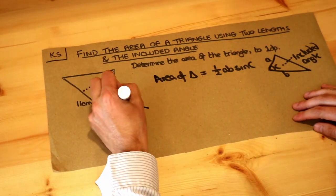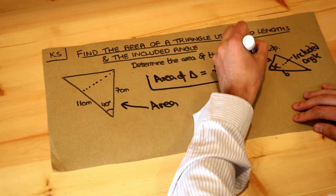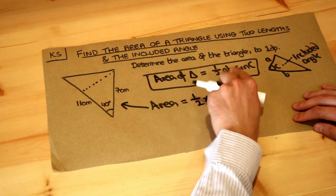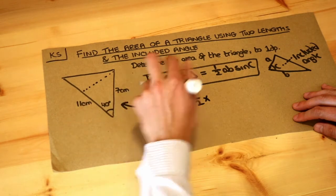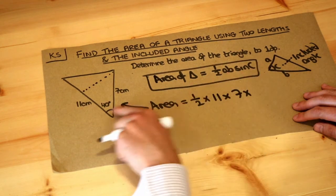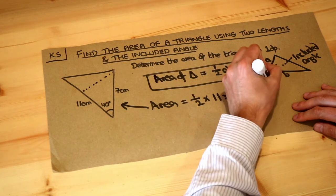So the area of this therefore using this formula is half times your two sides times together, so 11 times 7 doesn't matter which way round, multiplied by the sine of the angle between them, the included angle.